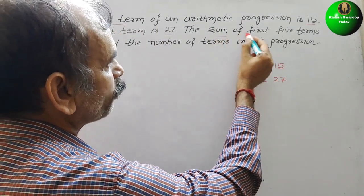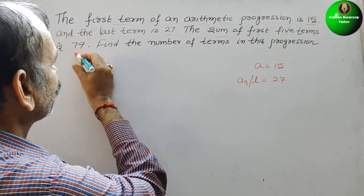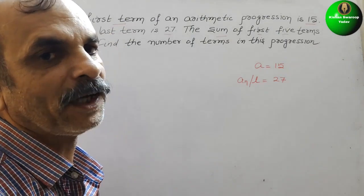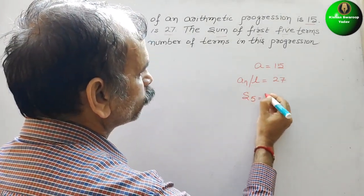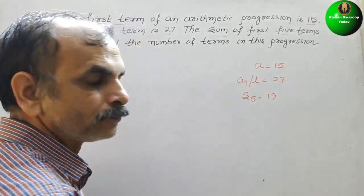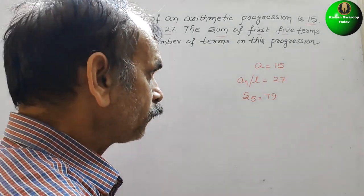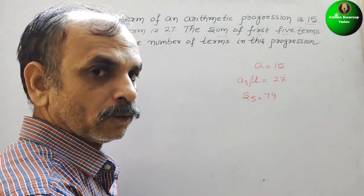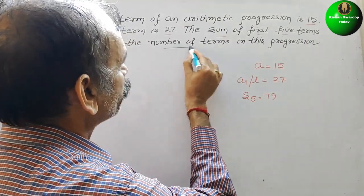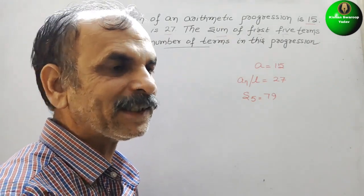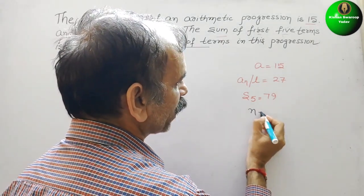The sum of first five terms is 79, so S5 is equal to 79. We have to find the number of terms, that means n. So n is question mark.